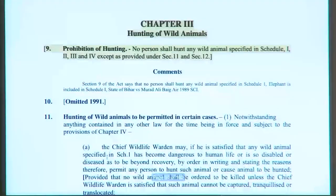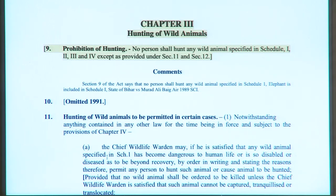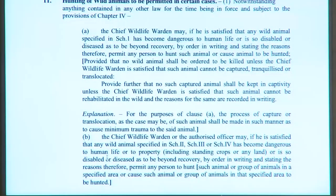Chapter 3 of the WPA deals with hunting of wild animals. Section 9 says no person shall hunt any wild animal specified in Schedules 1, 2, 3, and 4 except as provided under sections 11 and 12. There is a prohibition — not an absolute ban — on hunting; you can only hunt as provided under sections 11 and 12.